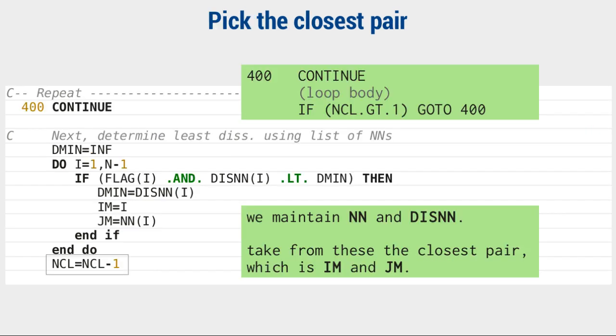I'm not a Fortran expert, but I'm sure continue is pretty much like no-op. But they do have for loops, so why don't they put a for loop with ncl here? Well, it's initiated up there, and it's decremented down there. That's their coding style. First thing in the loop is to identify the closest pair, which of course must occur among the nearest neighbor list we are maintaining.